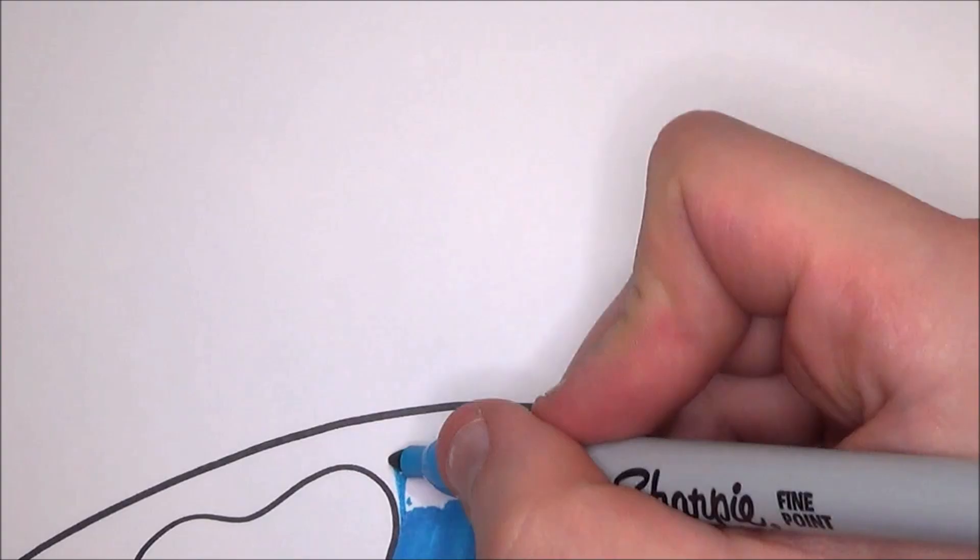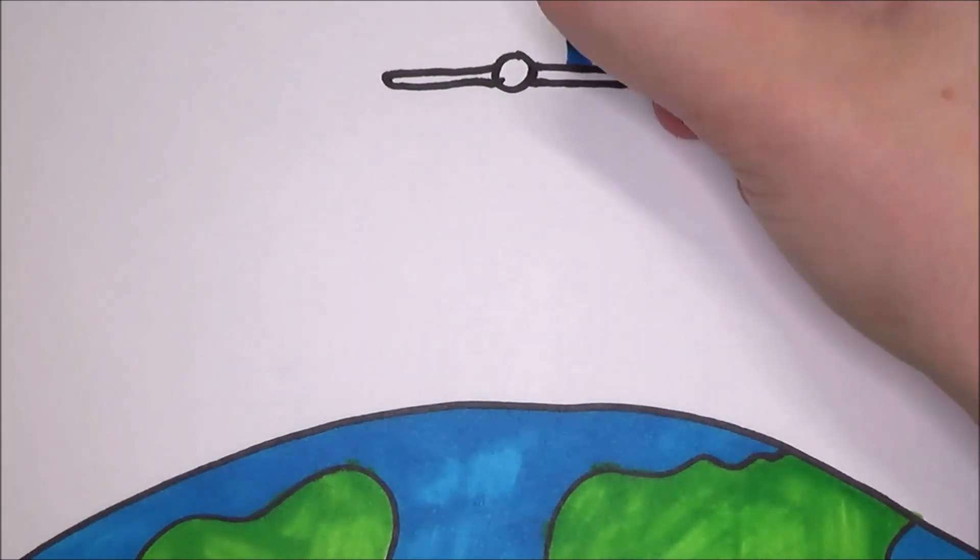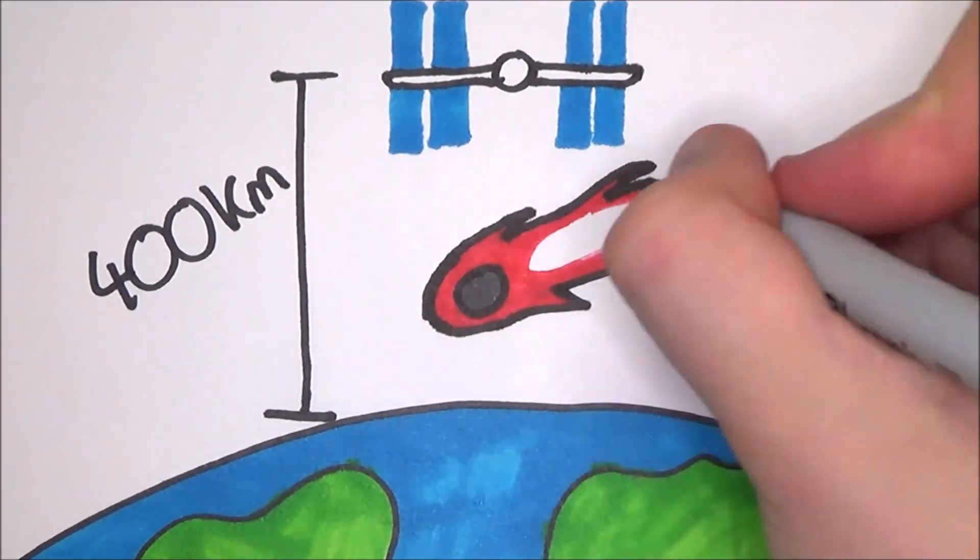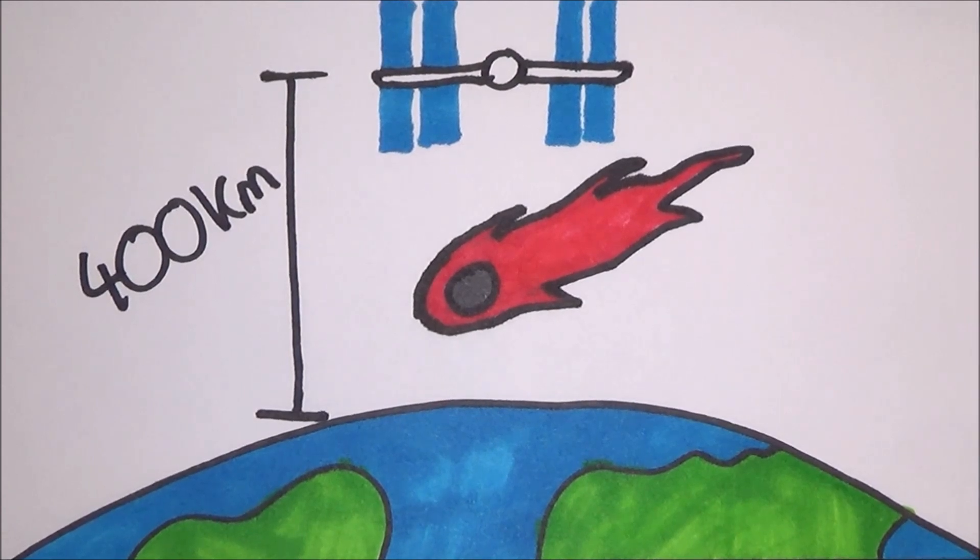Fact number 5. You can actually watch meteor showers from the ISS. Not as scary as it may seem, but at about 400 km above the Earth, the meteorites are actually below you in the atmosphere. I don't know if this would make them harder to see, especially if you have a city backdrop.